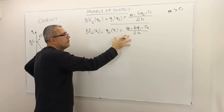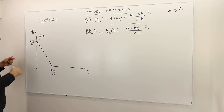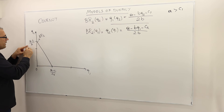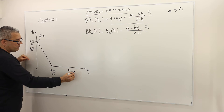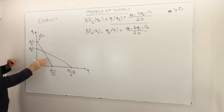For firm two's best response, when Q1 is zero, Q2 equals (A minus C2) divided by 2B. If C1 and C2 are equal, then (A minus C2) divided by B is the Q1 intercept. The best response function for firm two is another straight line, and the point of intersection of the two lines is the Nash equilibrium.